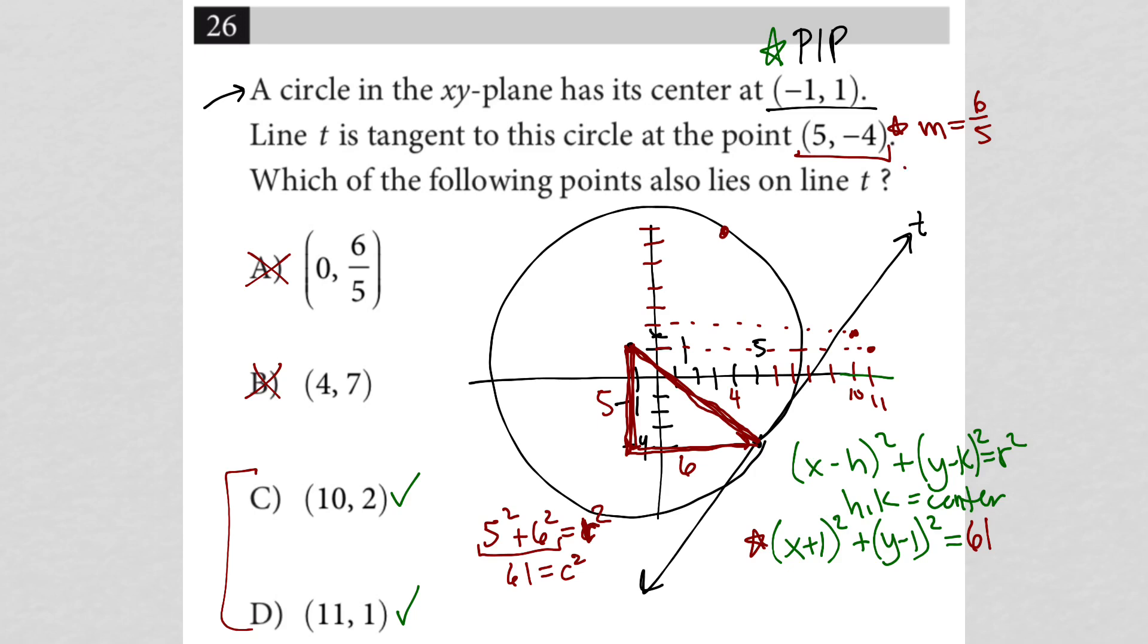So I can use that information along with slope-intercept form of a line and figure out the actual equation of the tangent line, which would be, let's put the y value in. So I'd say that's negative 4 equals the slope 6 fifths, the x value which was 5, plus b.